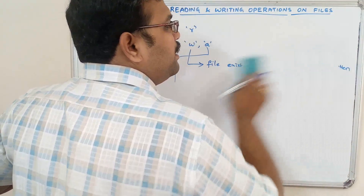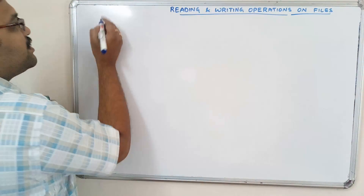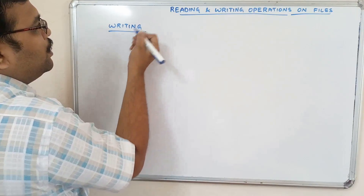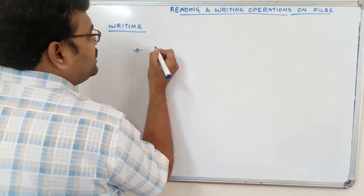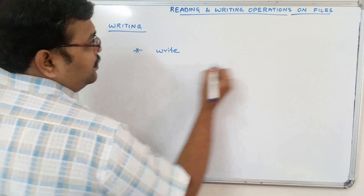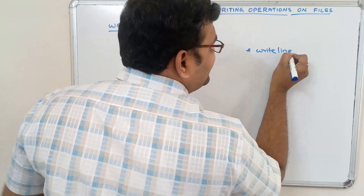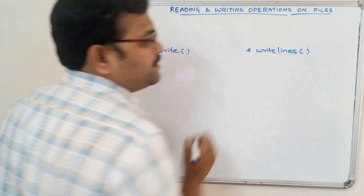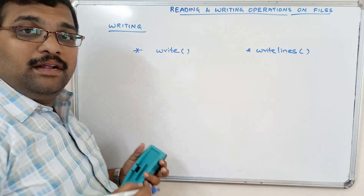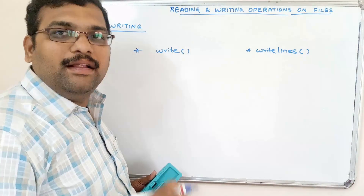Let us first look at the writing operation. There are two methods: write() and writelines(). The write() function will write a single line, whereas the writelines() function will write multiple lines.